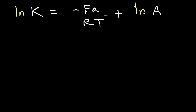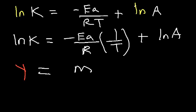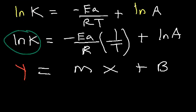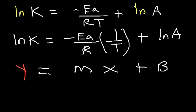Now putting this in slope-intercept form: ln k = (−Ea/R) × (1/T) + ln A. This is like y = mx + b. So ln k is y, the slope m is −Ea/R, 1/T is x, and the y-intercept b is ln A.